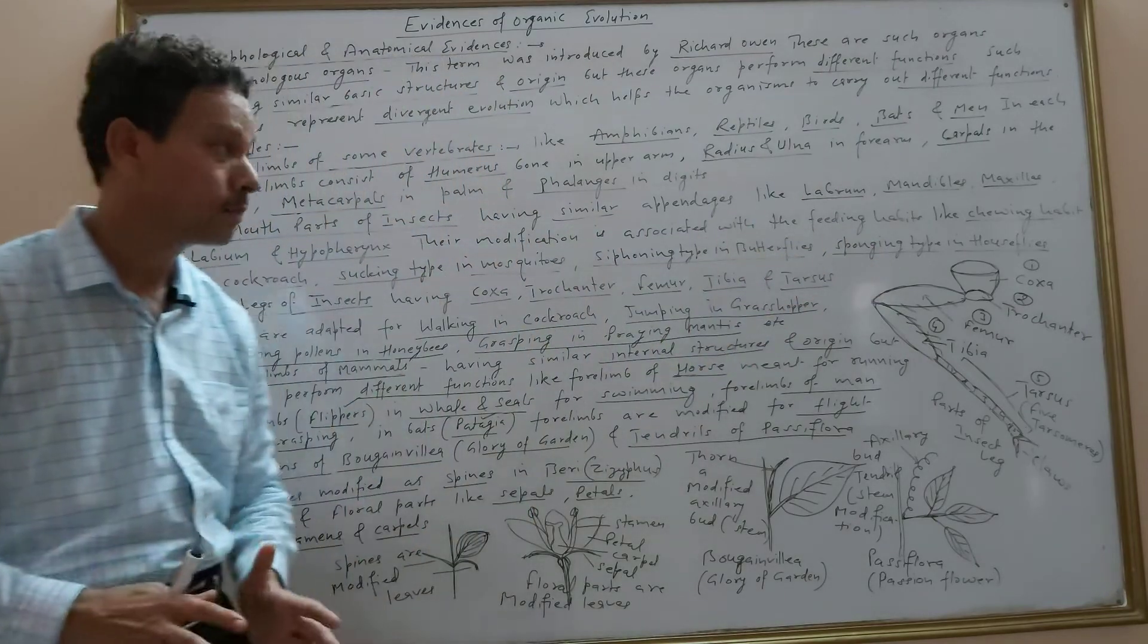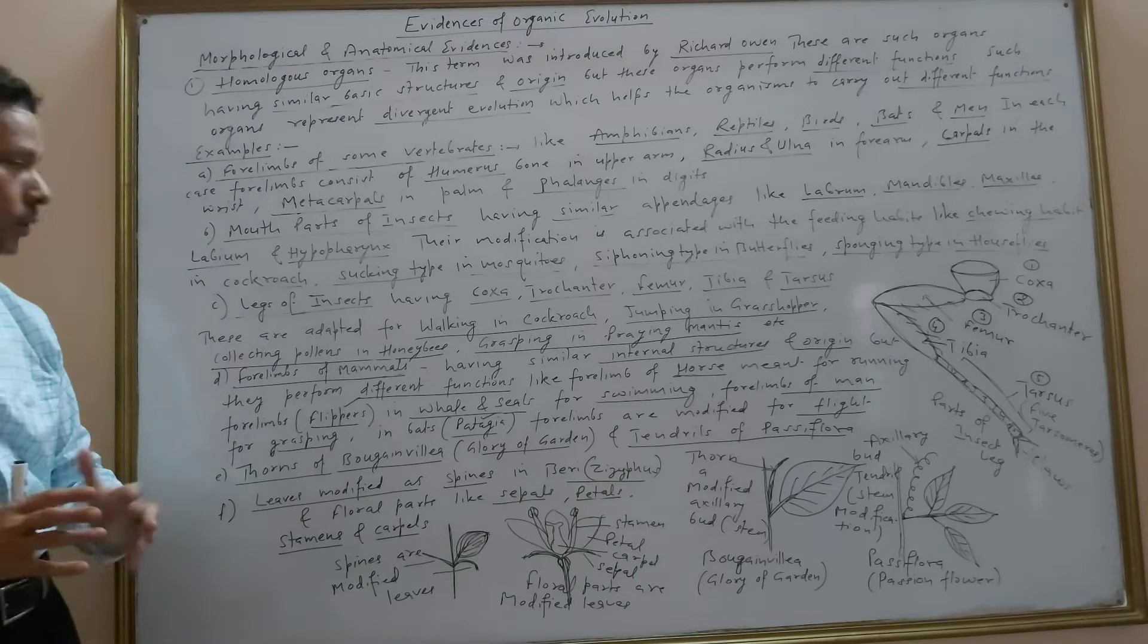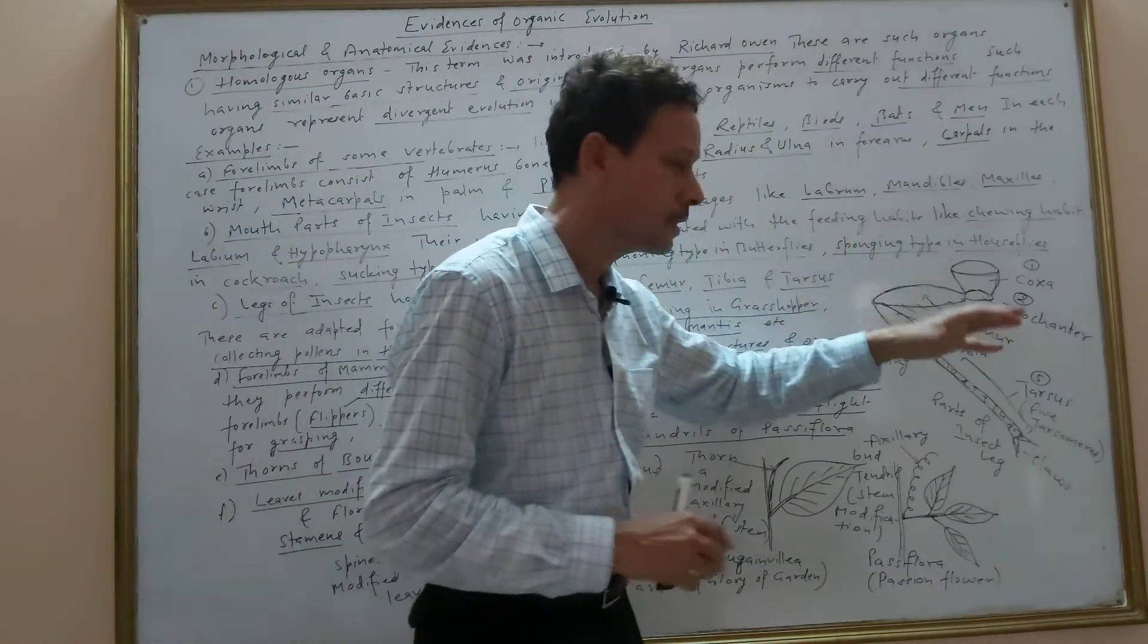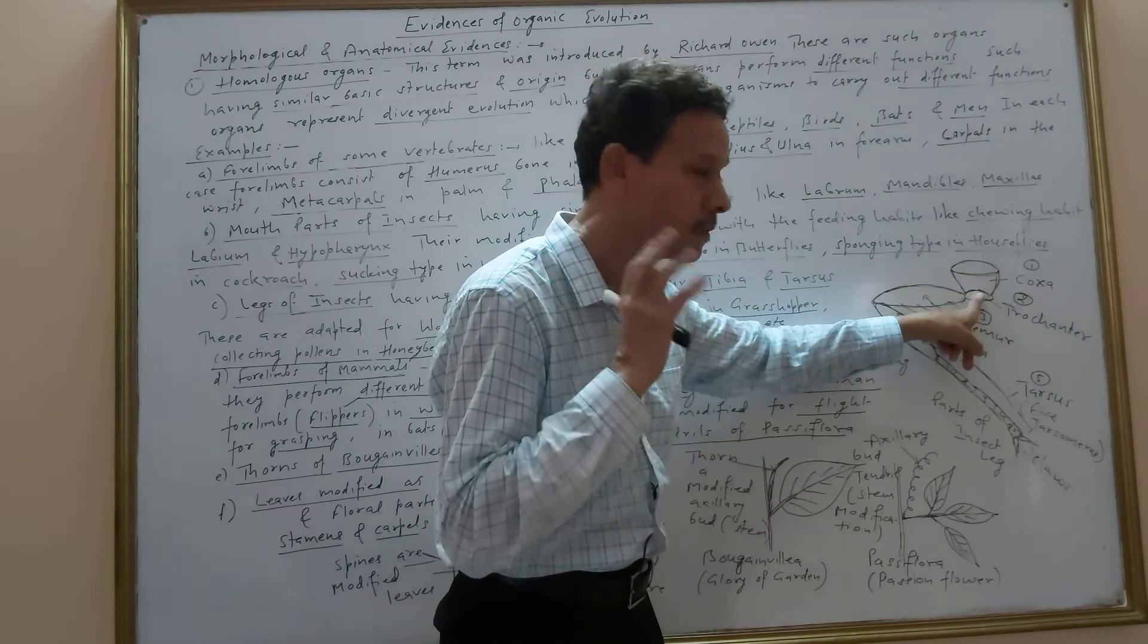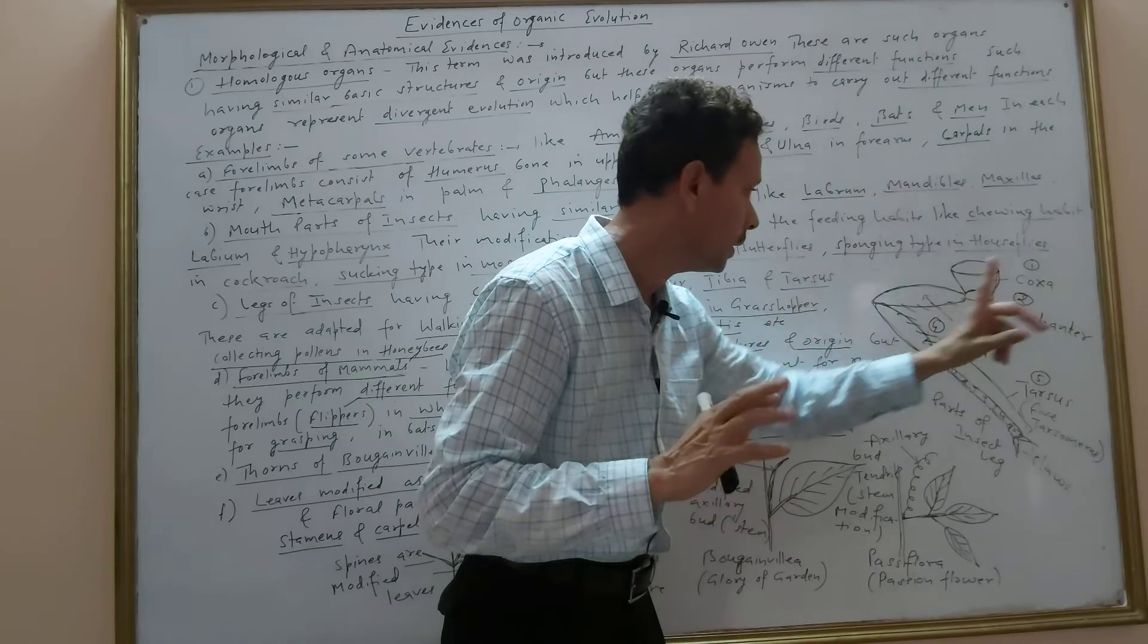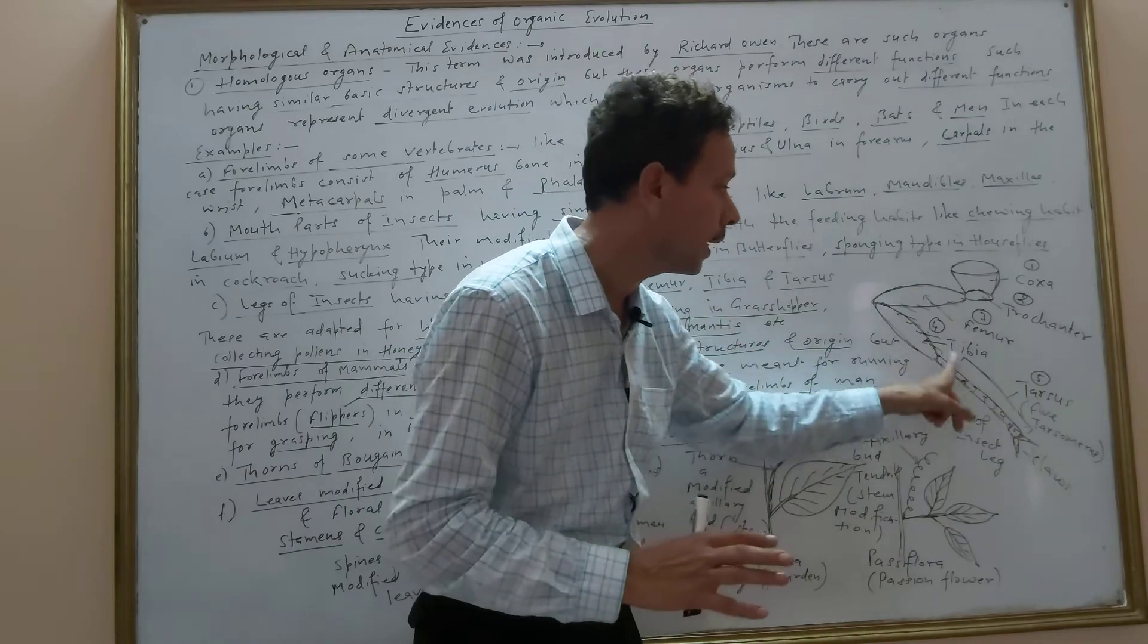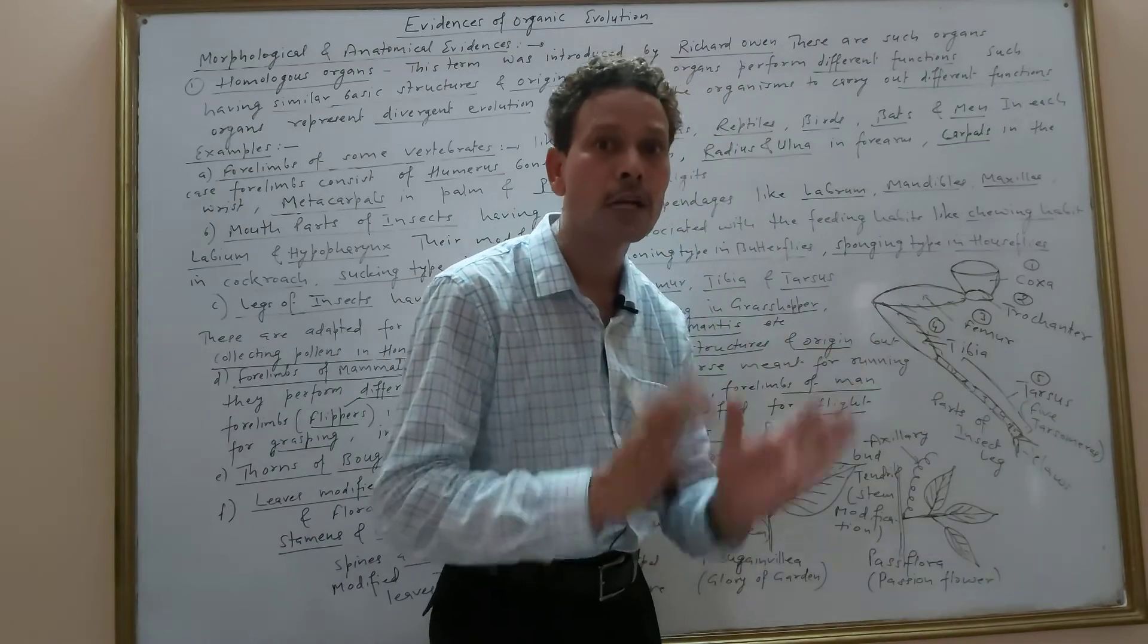Next example of homologous organs: legs of insects having five parts, pentamerous. First upper part is coxa, the smallest part is the triangular trochanter, this part is femur, fourth part is tibia, and the fifth last part is tarsus. Again, it is divided into five sub-segments called tarsomeres.